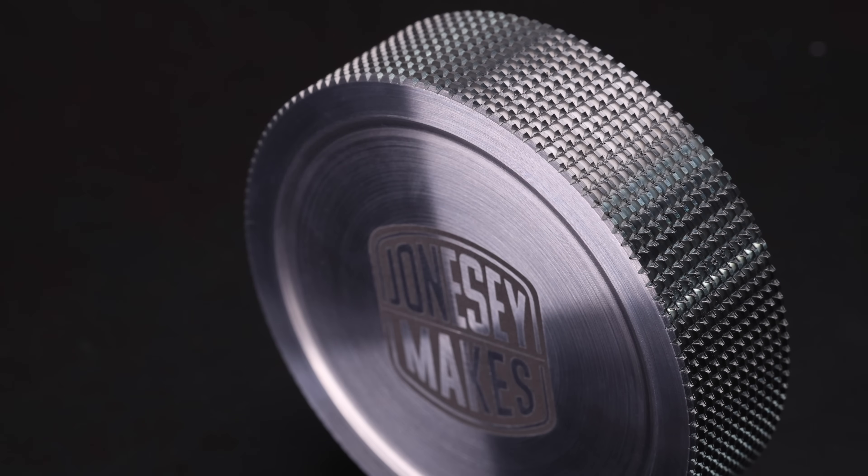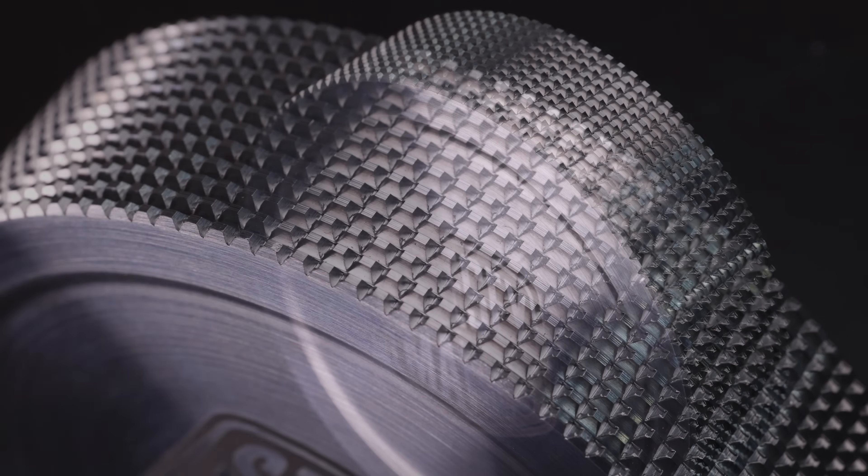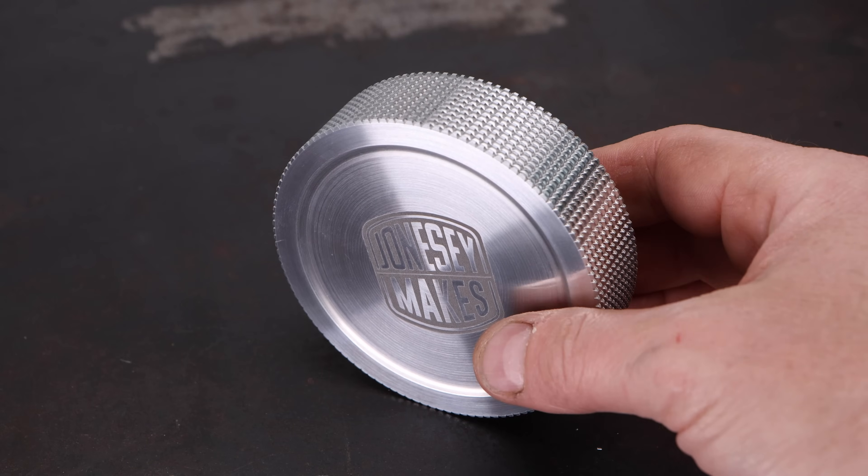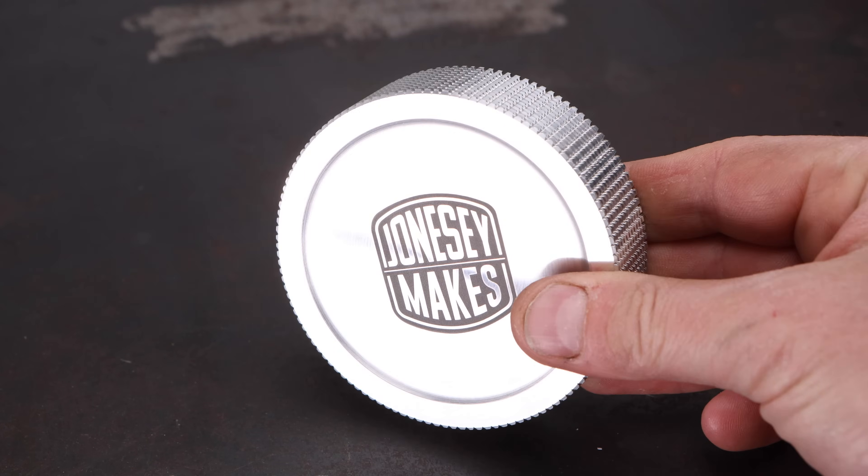Today we're going to be looking at the making of this handwheel and more specifically how I created this square knurling. I didn't use a knurling tool and we'll get into how I did produce it shortly. But first I'd like to give a little more context on what I'm trying to achieve here and what this handwheel is going to be used for.